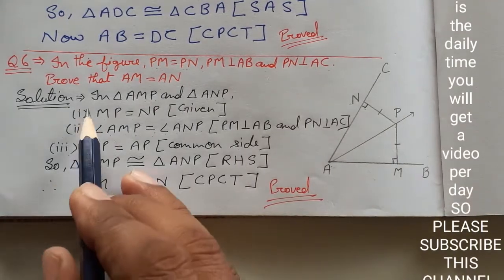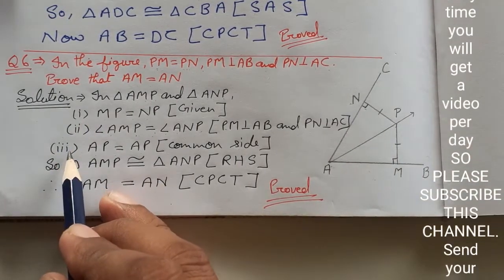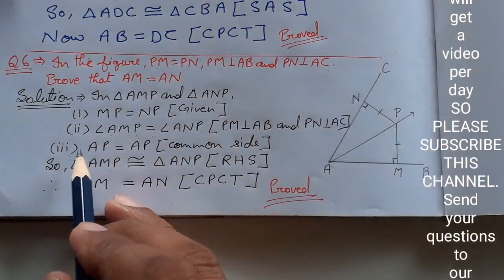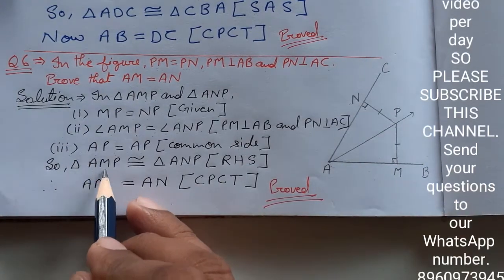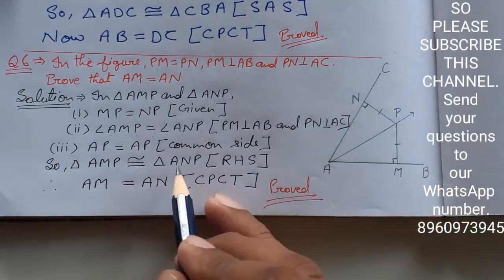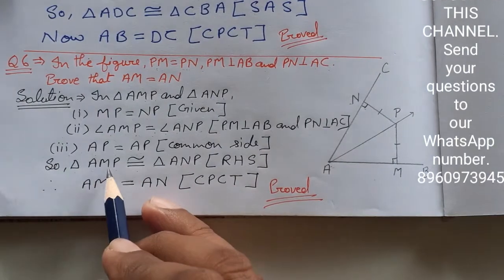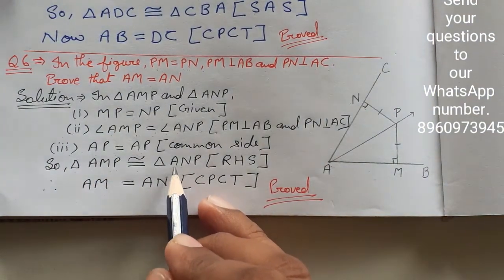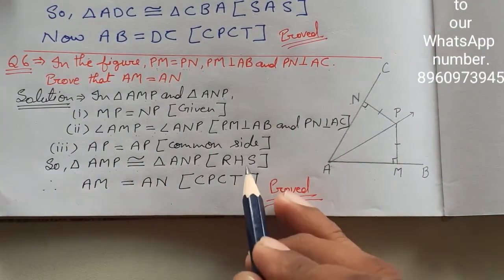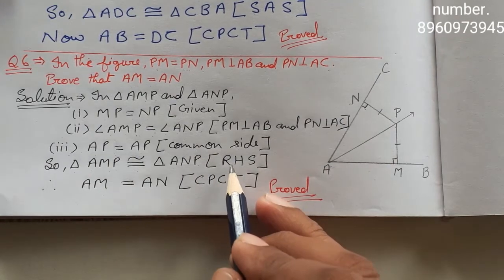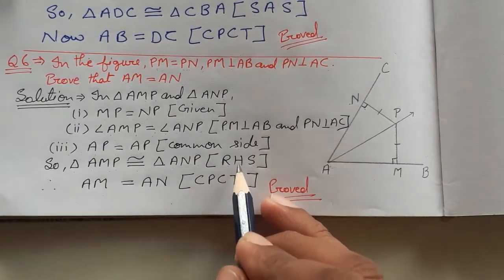After having proved three elements equal in two triangles, we can write triangle AMP is congruent to triangle ANP, and the property used is RHS - right angle, hypotenuse, side.